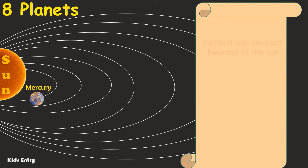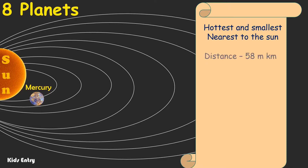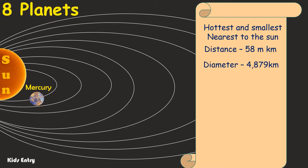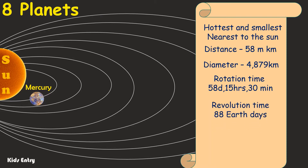Mercury: the hottest and smallest planet in our solar system, it is nearest to the Sun. Distance from the Sun to Mercury is 58 million kilometers. Its diameter is 4,879 kilometers. One day on Mercury lasts 58 days, 15 hours, 30 minutes. One year on Mercury lasts 88 Earth days. It does not have moons.